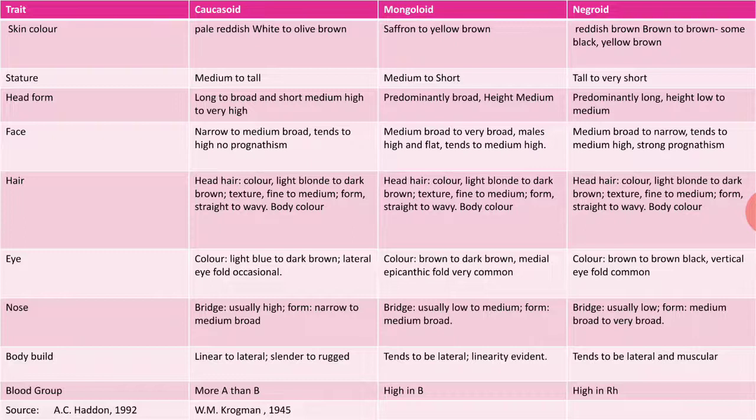I am now showing a table with the three different types of race and the traits used for their differentiation. First is skin color: Caucasoid have pale reddish-white to olive-brown skin; Mongoloid, saffron to yellow-brown; Negroid, reddish-brown to brown and some black or yellow-brown. For stature: Caucasoid range from medium to tall; Mongoloid, medium to short; and Negroid, tall to very short.